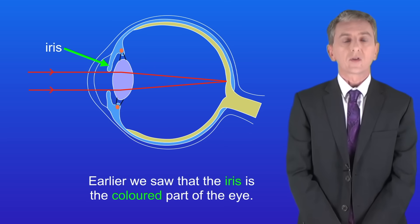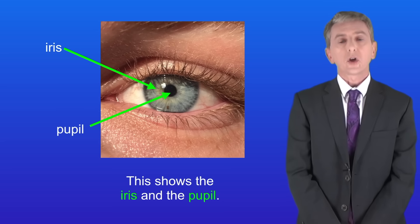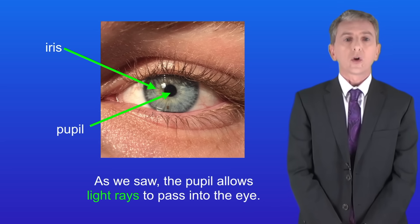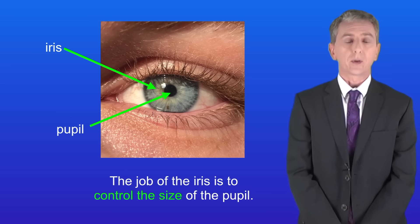Okay now earlier we saw that the iris is the coloured part of the eye. The pupil is the space in the centre of the iris which light passes through. I'm showing you the iris and the pupil here. As we saw the pupil allows light rays to pass into the eye and the job of the iris is to control the size of the pupil.